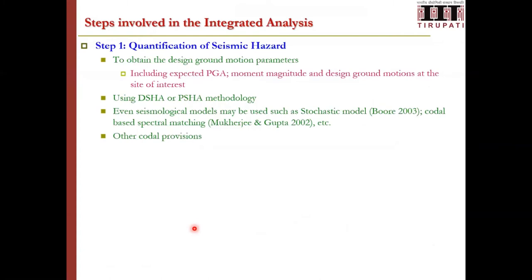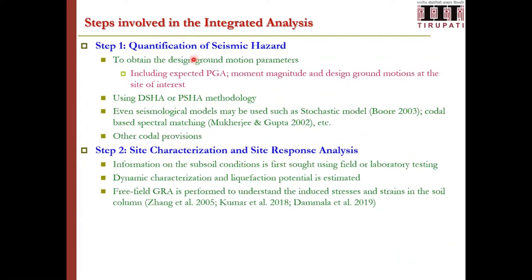Step one is quantification of seismic hazard: we need expected PGA, moment magnitude, and related parameters. For sensitive and high-budget structures, one can perform site-specific deterministic seismic hazard analysis (DSHA) or probabilistic seismic hazard analysis (PSHA) to obtain ground motions — as done for nuclear power plants. For normal structures, code provisions can be used for seismic hazard quantification.